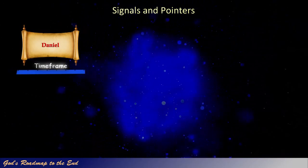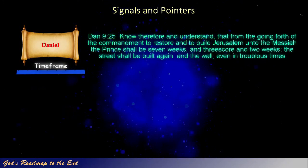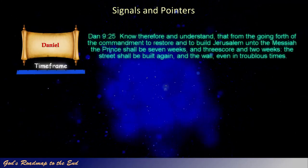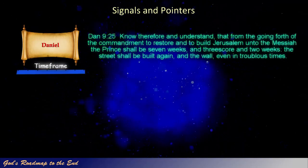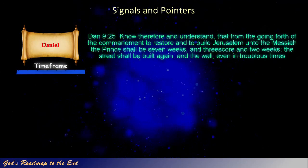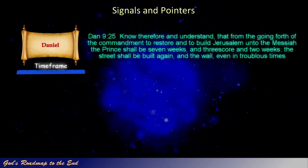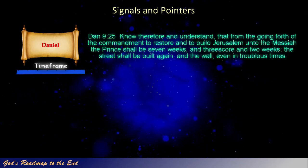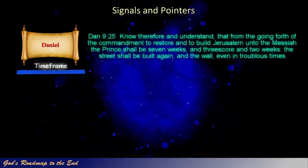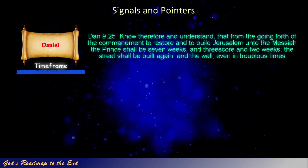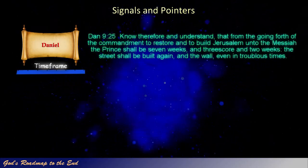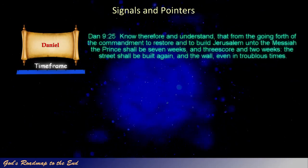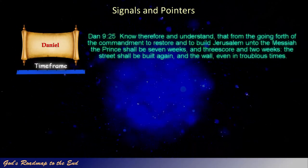Daniel 9 verse 25: 'Know therefore and understand, that from the going forth of the commandment to restore and to build Jerusalem unto the Messiah the Prince shall be seven weeks, and threescore and two weeks, the street shall be built again, and the wall, even in troublous times.' Sixty-nine weeks of years, or four hundred and eighty-three years after the decree was given to rebuild Jerusalem by Artaxerxes, Jesus rode into Jerusalem on a donkey.